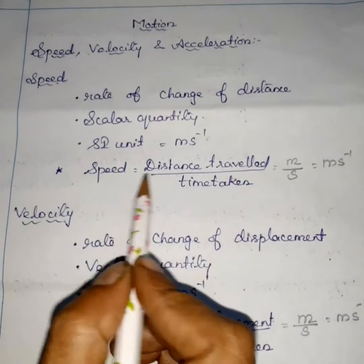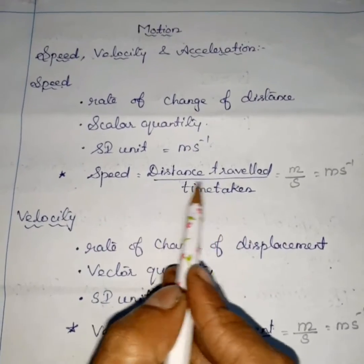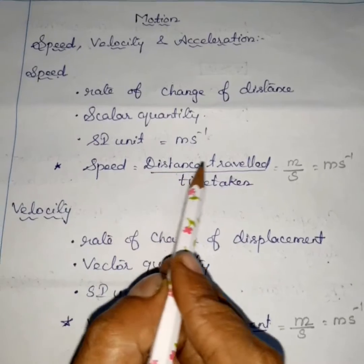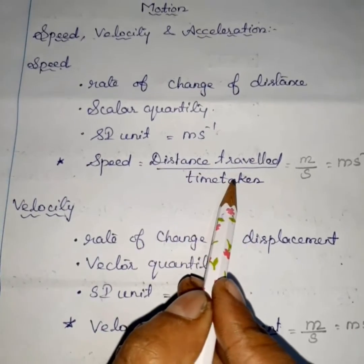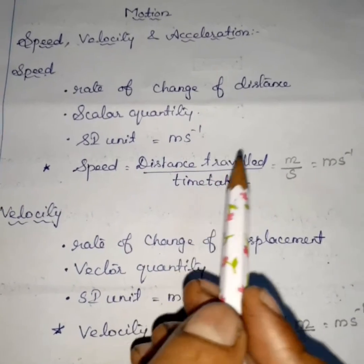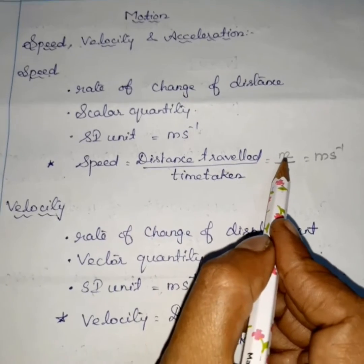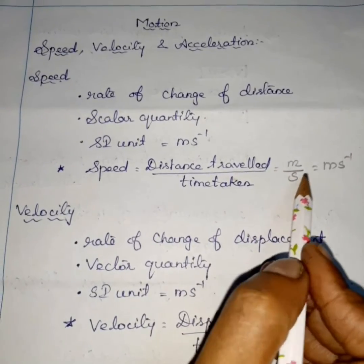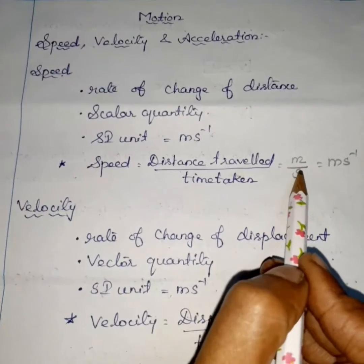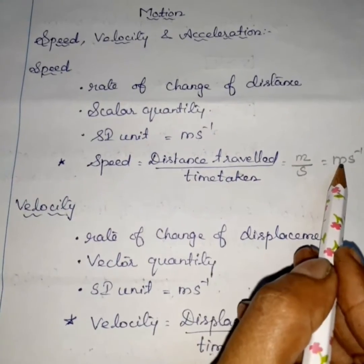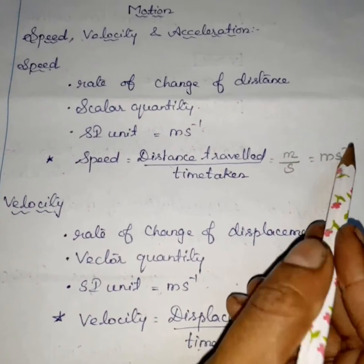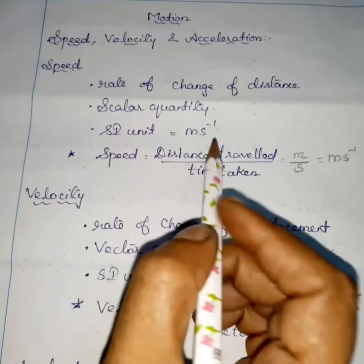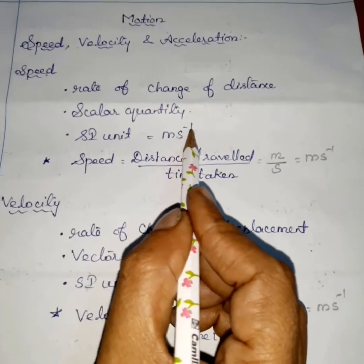Speed is equal to distance traveled divided by time taken. The SI unit of distance is meter and SI unit of time is second. So the unit is meter per second, written as meter second power minus one. The SI unit of speed is meter second power minus one.